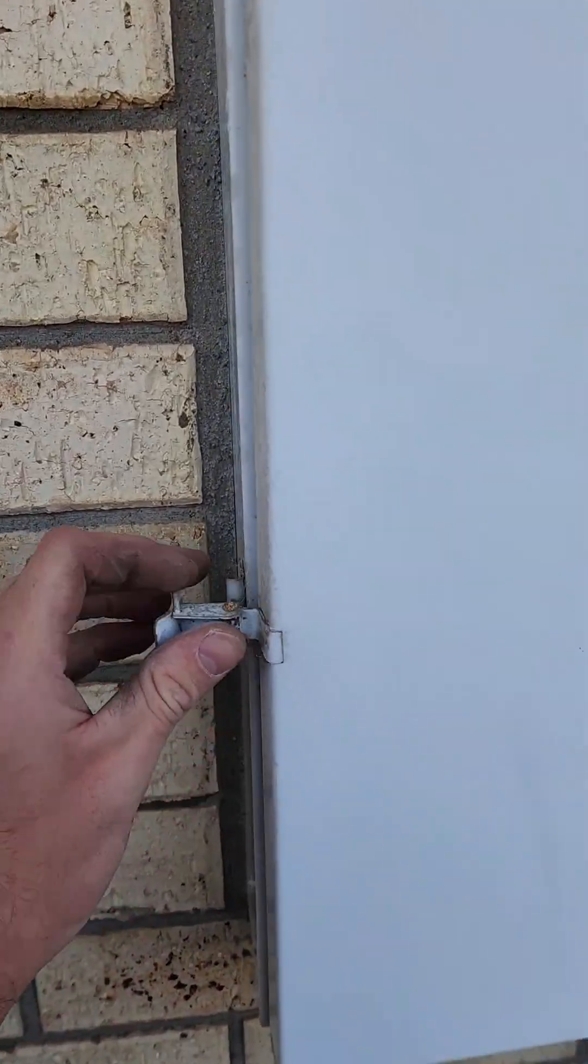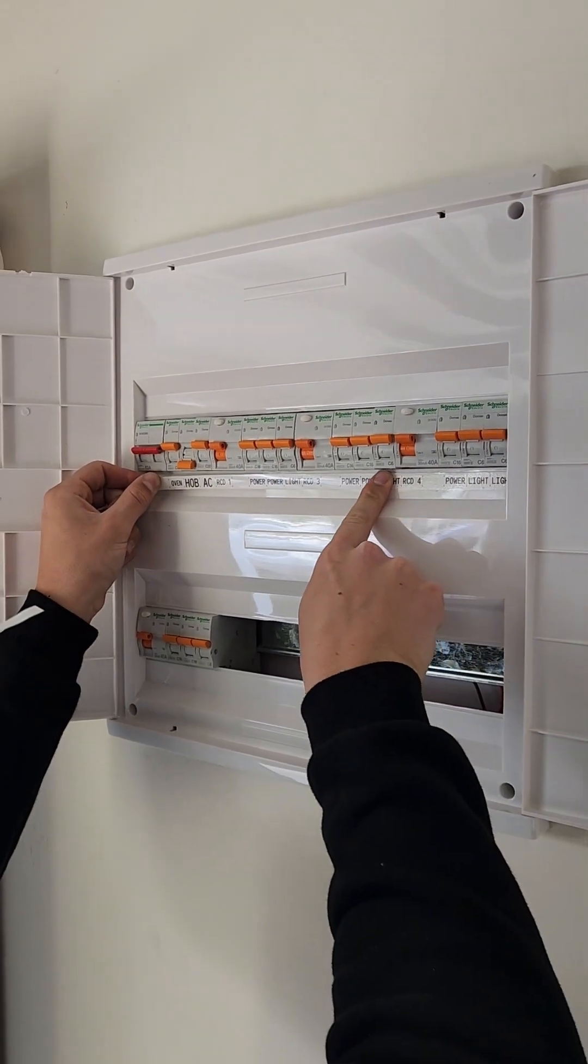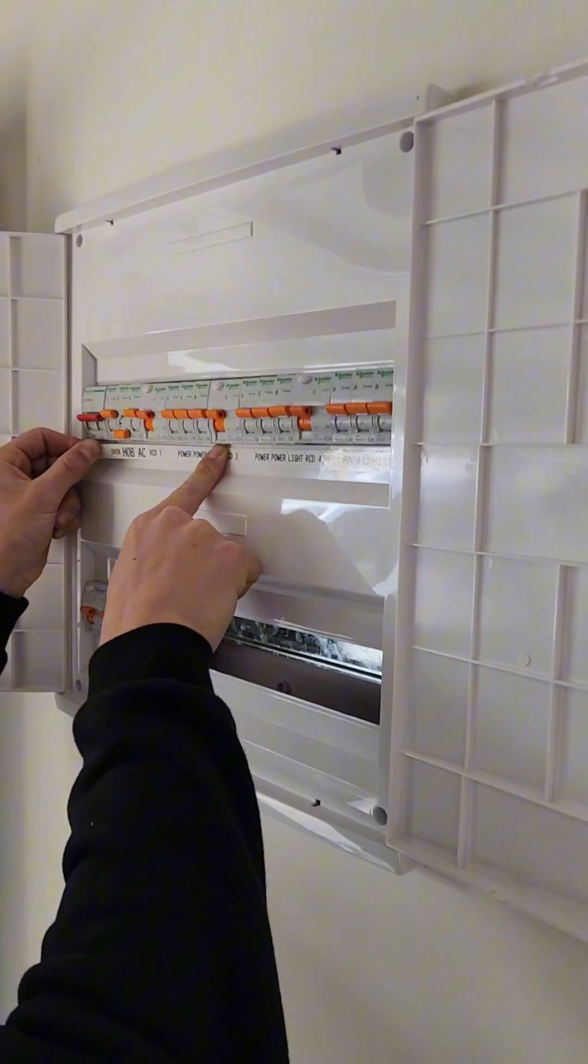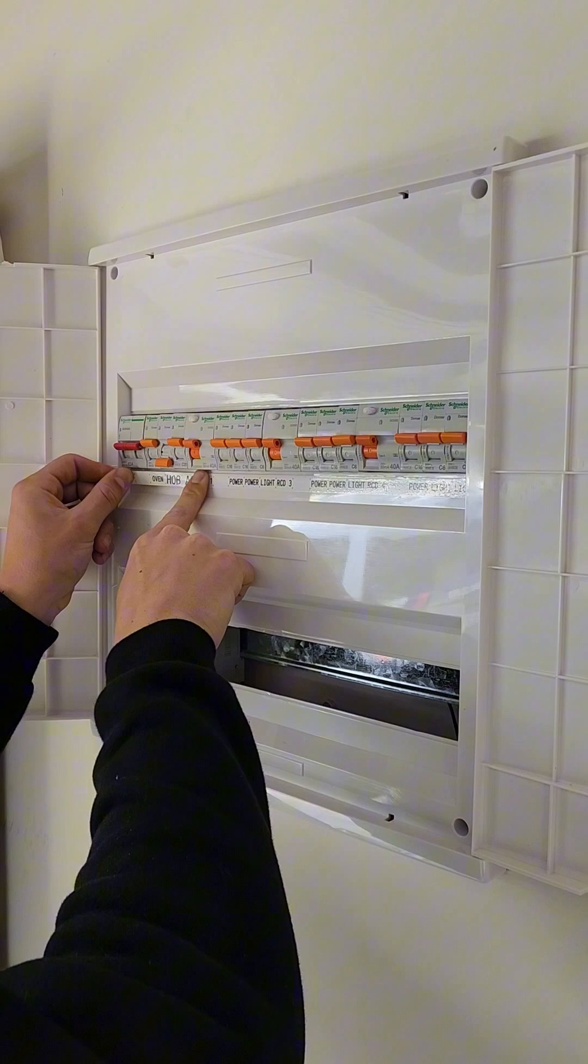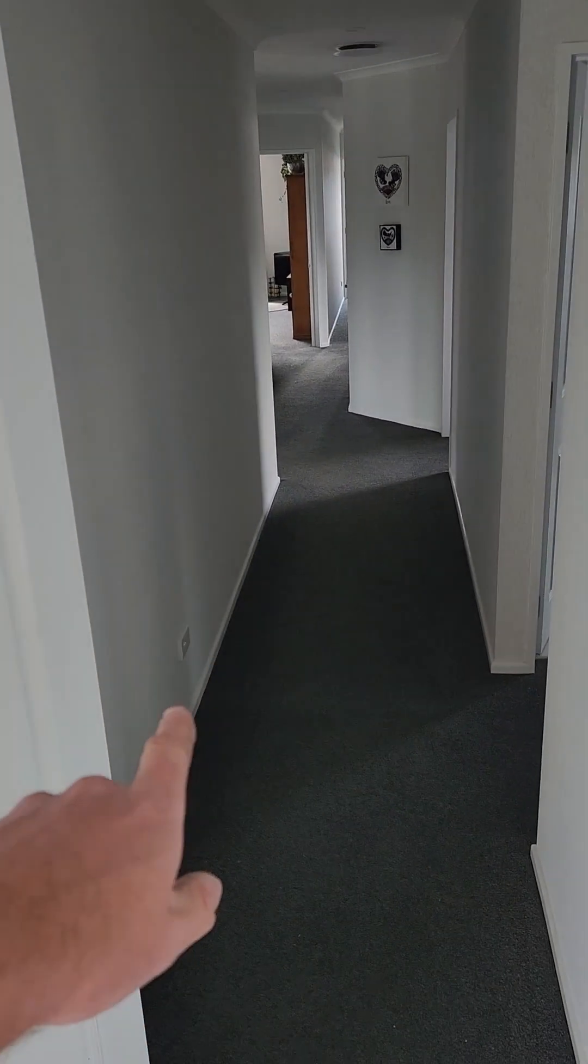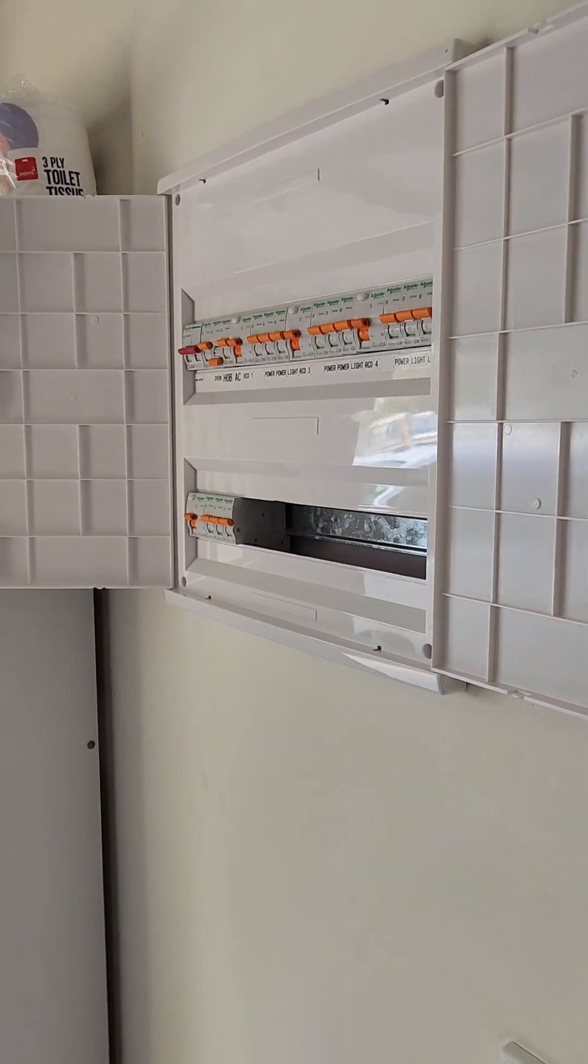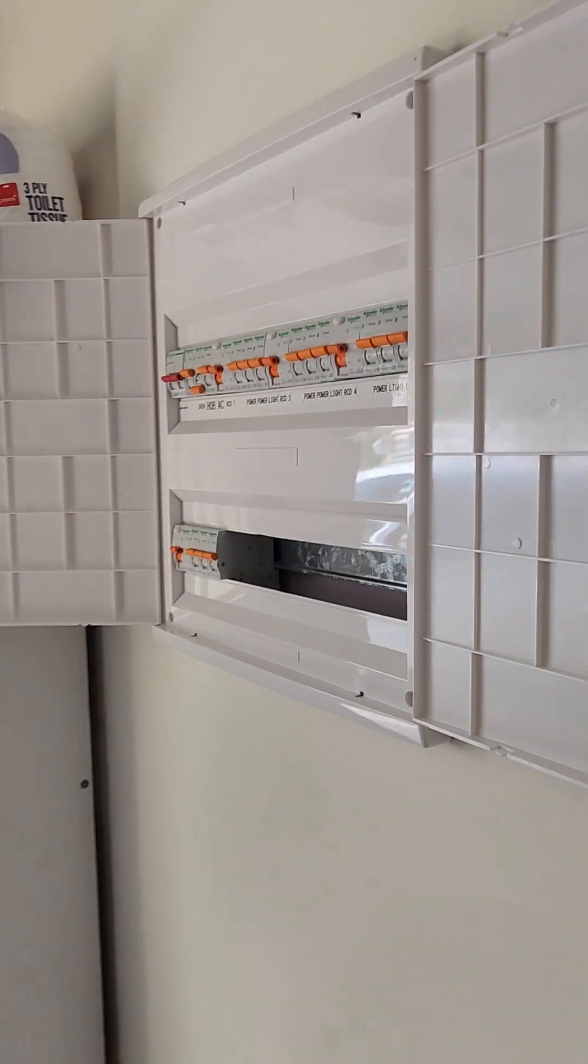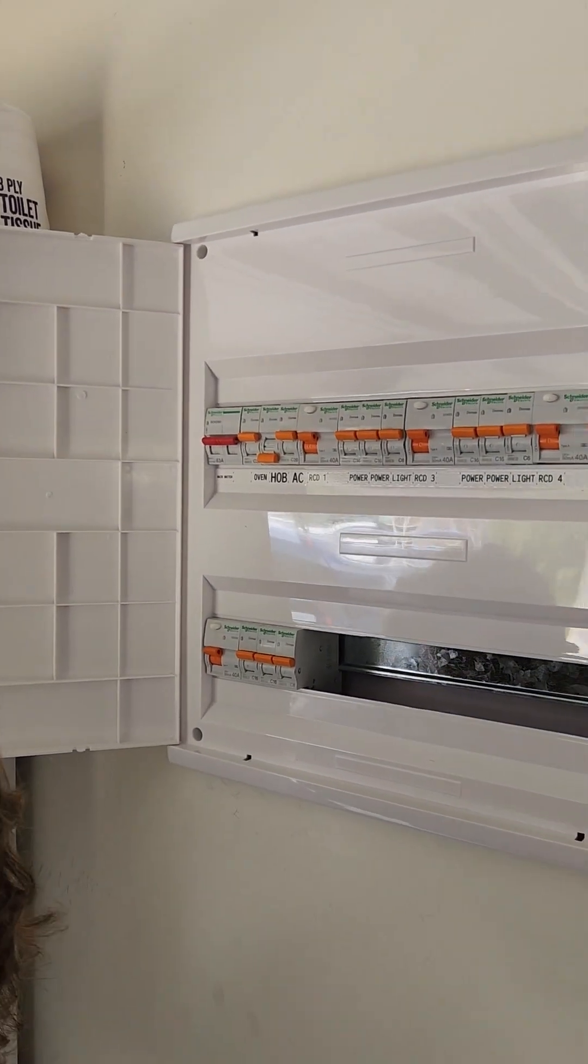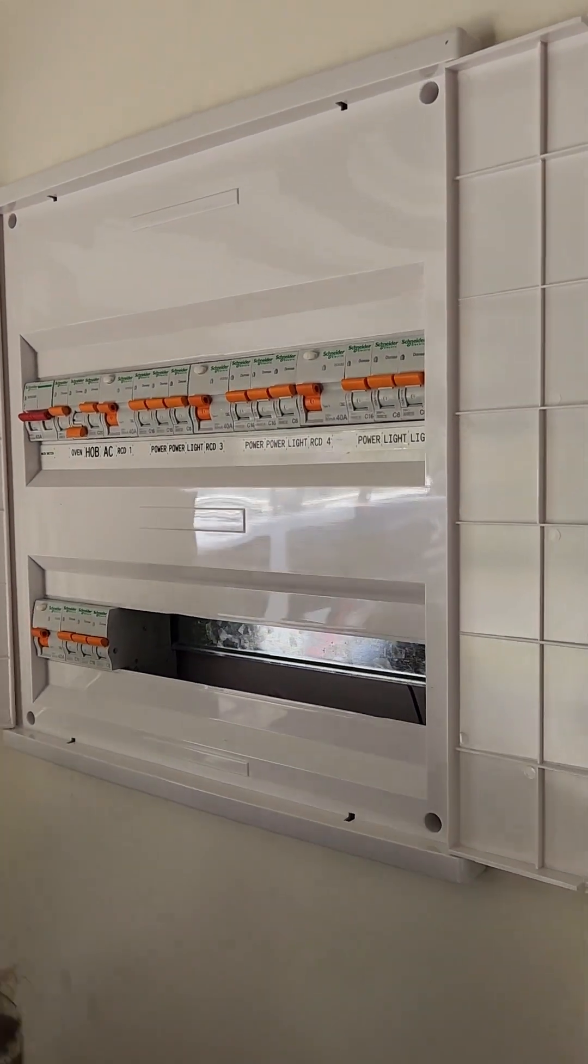So we've got the meter board all closed up, just putting the switchboard labels on, covers on, we've had the inspection, we're all done. It's all working, all tested. I've gone through the house and tested the hot points, they're all working. Work done. Hopefully you've learnt something, that's a switchboard upgrade, pretty straightforward. Follow for more from NZ Trading.